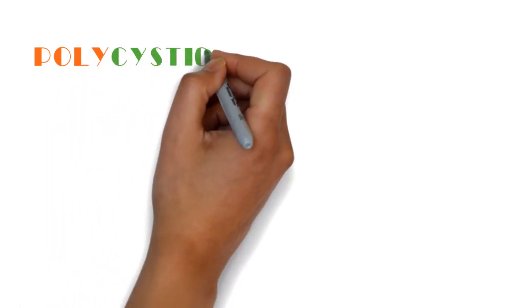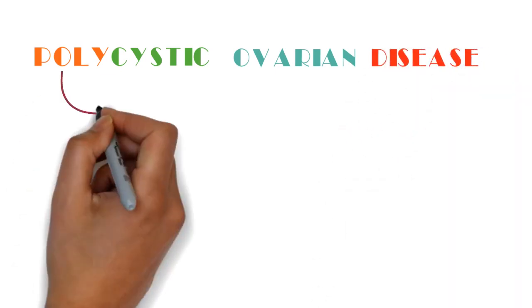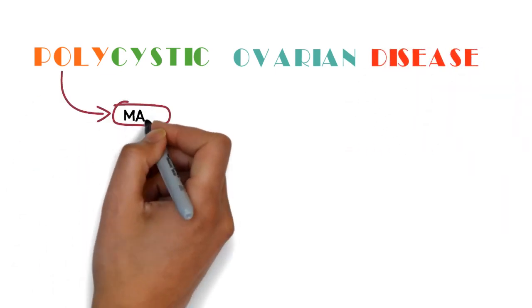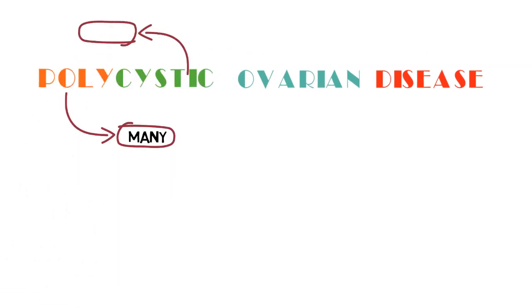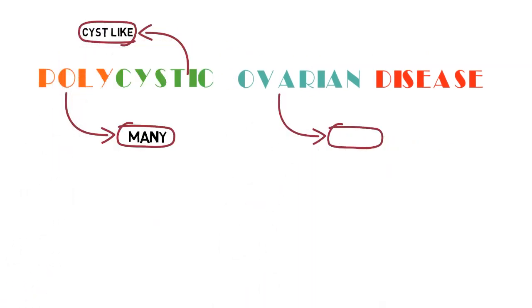PCOD or PCOS is the most common disorder in women occurring at their reproductive ages. Polycystic ovarian disease in which poly refers to many, cystic refers to cyst-like, and ovary refers to ovary. So there are multiple cysts present in the ovary resulting in polycystic ovarian disease.